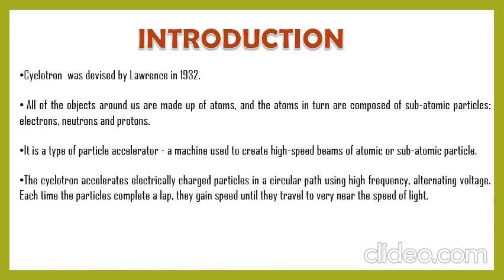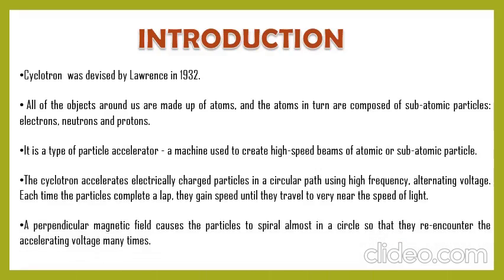How does a cyclotron work? Basically the cyclotron accelerates a particle by revolving it on a circular path, and this acceleration is provided by an alternating voltage — we will discuss this in the working principle later. For revolving any charged particle on a circular path we need a magnetic field. When we pass a particle through an electric field one or more times, it gains energy each time.